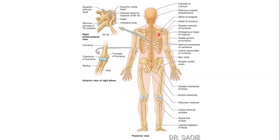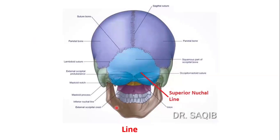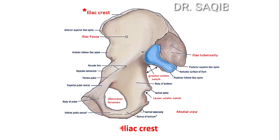I will discuss each and every feature with a separate clear picture. First of all there are linear elevations. It could be a line, like the superior nuchal line of the occipital bone of the skull. Next is the ridge — the medial supracondylar ridge and the lateral supracondylar ridge of the humerus, which is the arm bone in the upper limb. And this is the iliac crest of the hip bone.